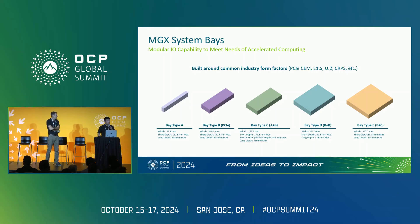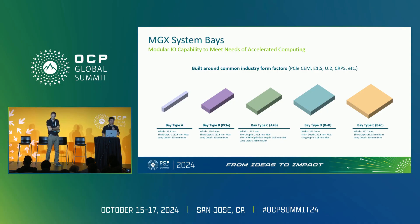One of the key features of MGX is modularity with the base system. There are IO needs across different applications and configurations. The base system allows the use of common industry form factors housed in bays to make things more accessible, replaceable, and upgradable. The form factors called out include PCIe, E1.S, U.2, CRPS, et cetera.